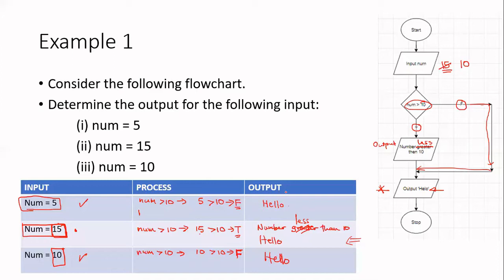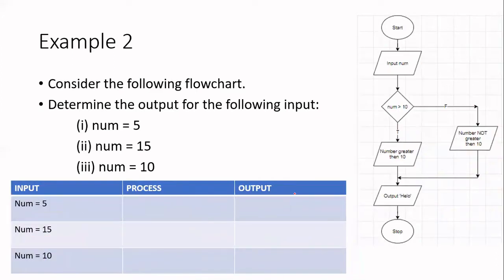Let's look at another example to better understand what we are doing. This flowchart is very similar but has one additional box. Remember, the output boxes should have 'output' or 'print' labels — I omitted those, which is a mistake on my side. When writing your flowcharts, you should have them in.